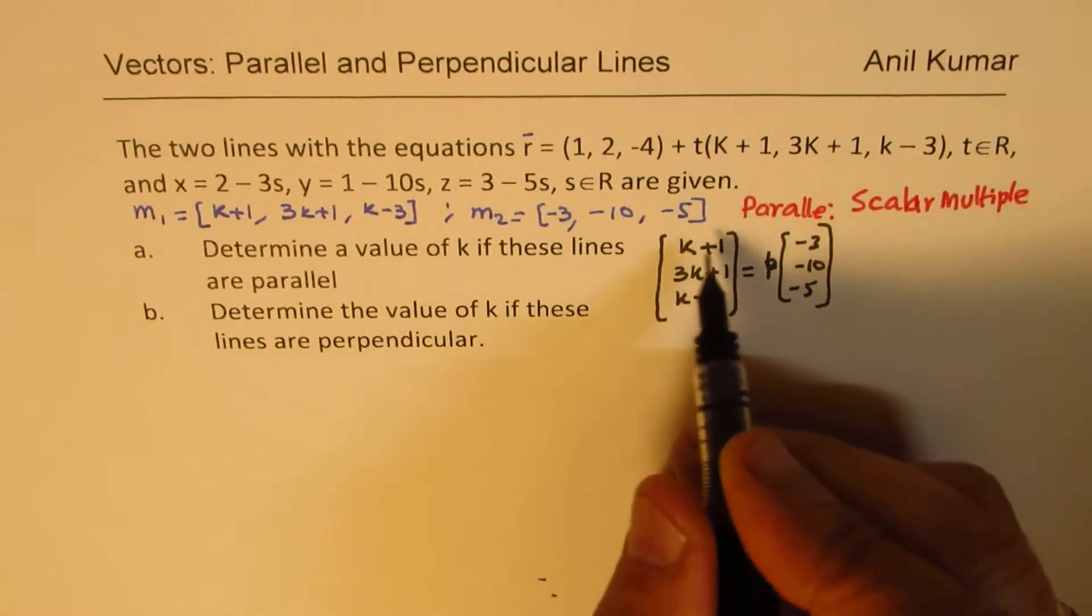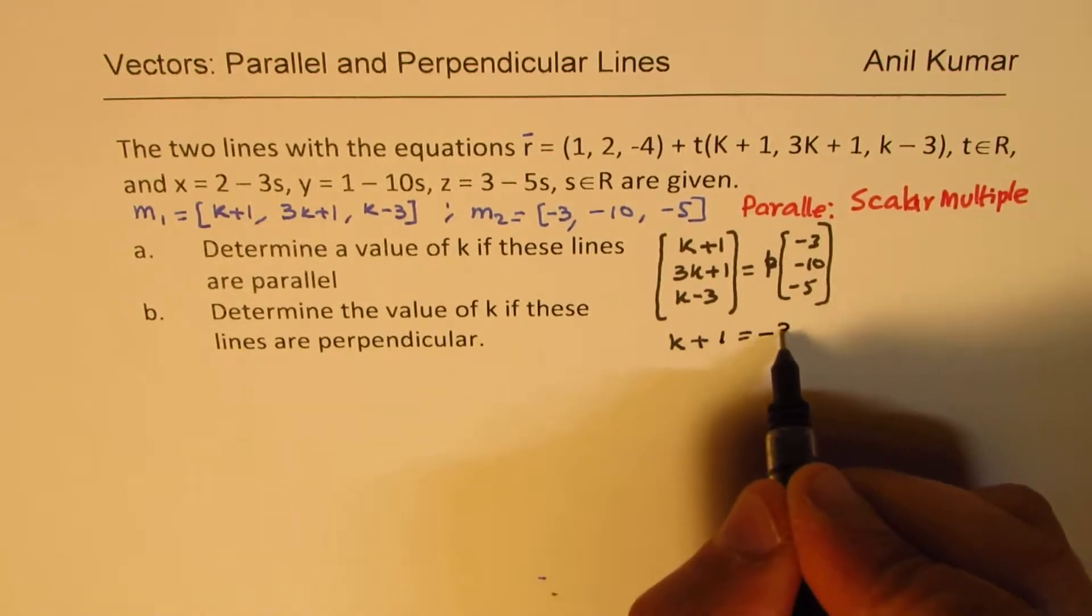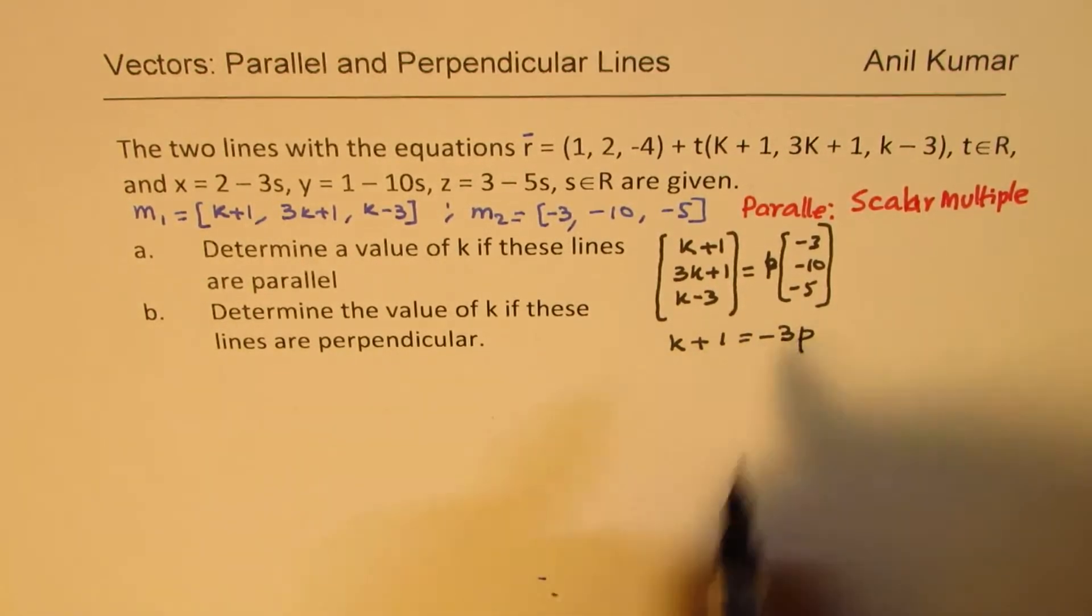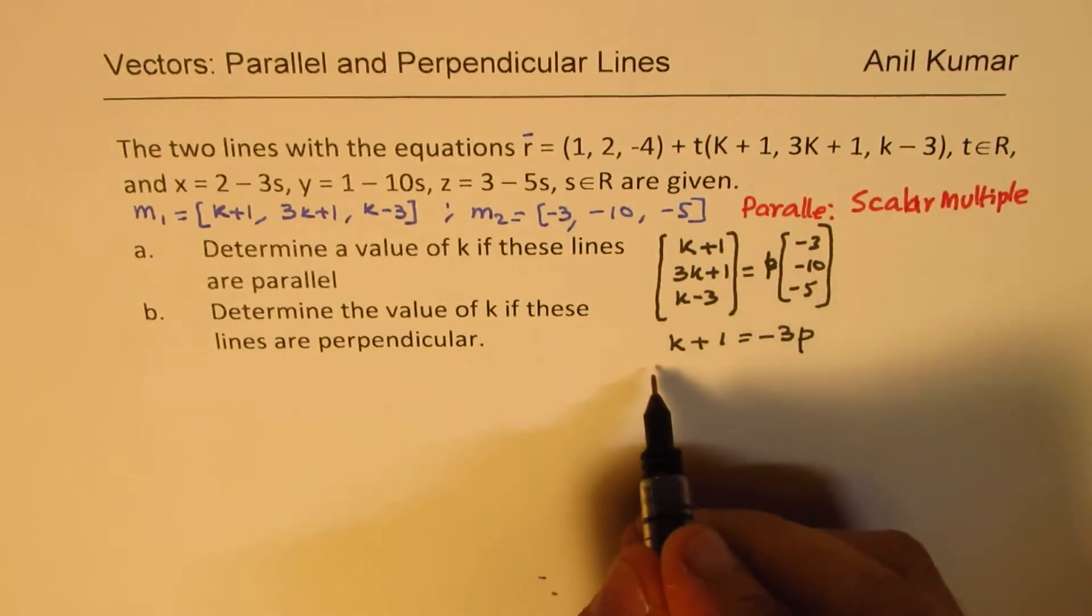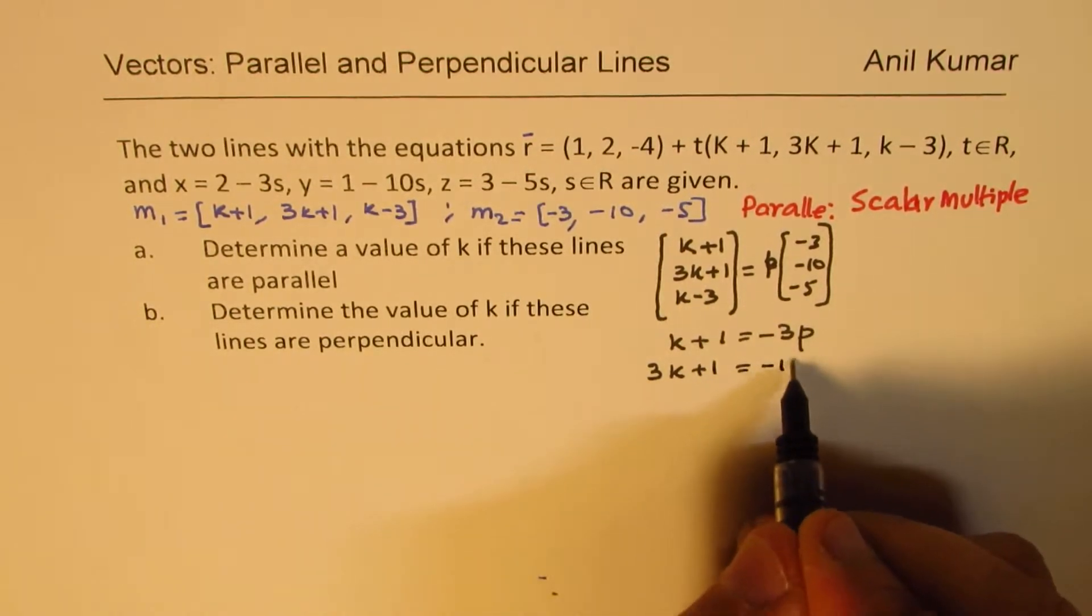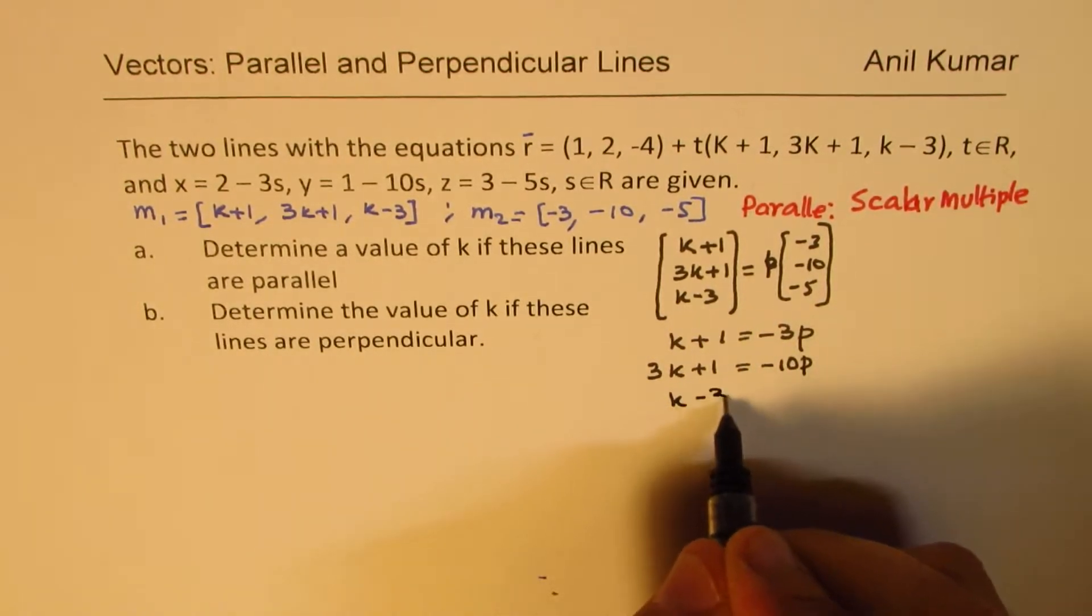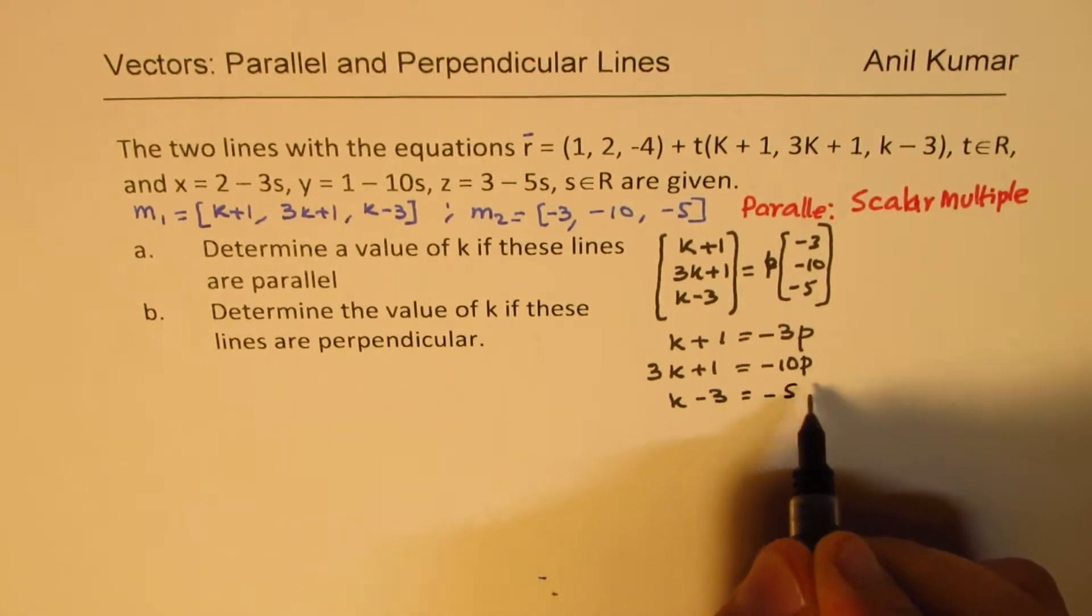Now here, directly you get three equations. The first one is k+1 = -3p. The second one is 3k+1 = -10p. And the third one is k-3 = -5p.